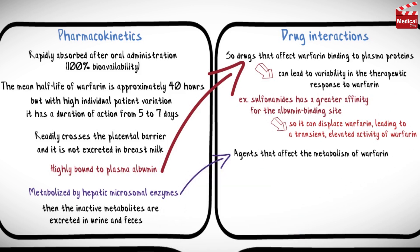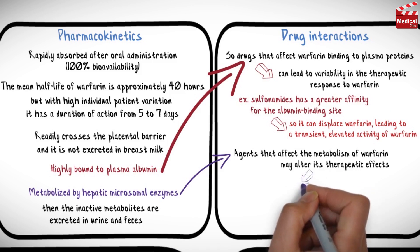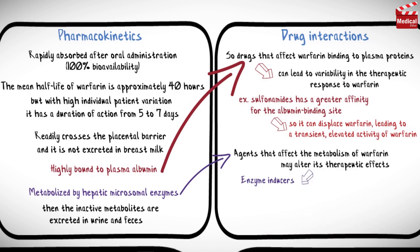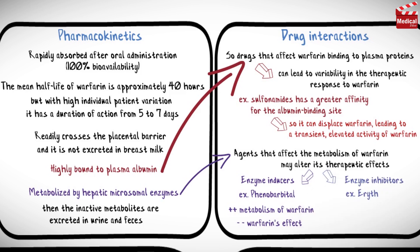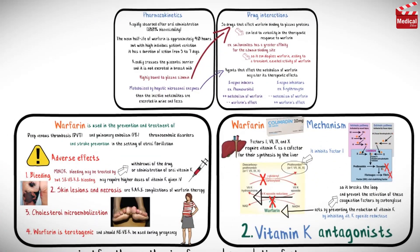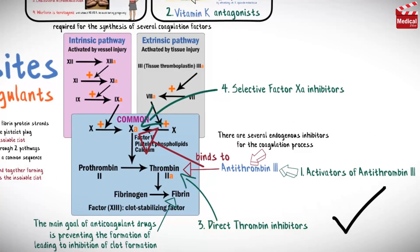Agents that affect the metabolism of warfarin may increase or decrease its therapeutic effects. Enzyme-inducing drugs such as phenobarbital increase the metabolism of warfarin, thereby decreasing warfarin's effect. Enzyme-inhibiting drugs such as erythromycin decrease the metabolism of warfarin, thereby increasing warfarin's effect. In the next lecture we'll talk about the direct thrombin inhibitors and the selective factor 10a inhibitors.